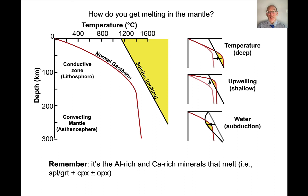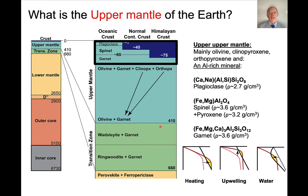The shallowest melting phenomenon is actually during upwelling — the kind of thing that happens at mid-ocean ridges. It's the aluminum and calcium-rich minerals that melt first, usually spinel or garnet and clinopyroxene, with some orthopyroxene and olivine too. Plagioclase is stable only at very shallow levels, and although upwelling creates melting at relatively shallow levels, it's rarely in the plagioclase peridotite field. Most of the time it's in the spinel peridotite field, around 30 to 50 kilometers depth. Subduction zones tend to be deeper, and those deeper forms of melting can involve garnet rather than spinel.